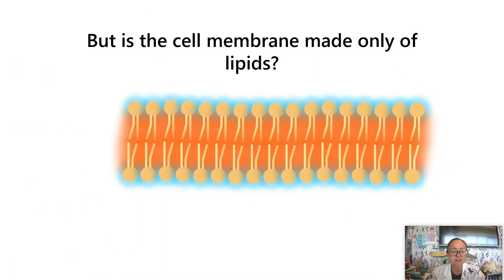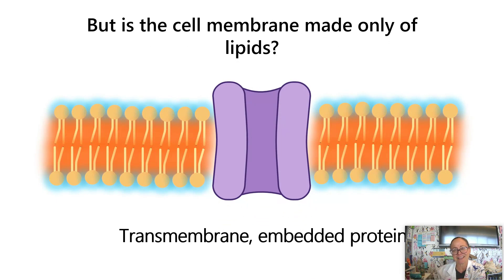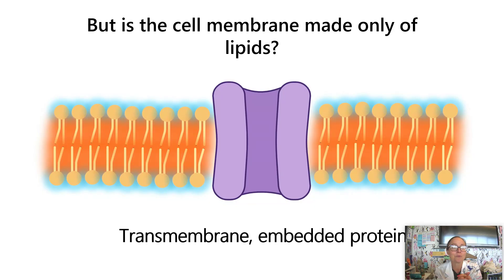A cell membrane is not made only of lipids — there are also proteins embedded within it. Proteins can have up to six different functions within the membrane. In unit two we'll talk about transport proteins, channel proteins, and active transport pumps. In unit four we'll discuss receptor proteins and enzymes embedded within the membrane. So there's a variety of proteins with different jobs located within the cell membrane.